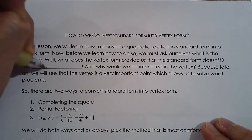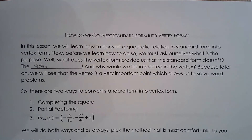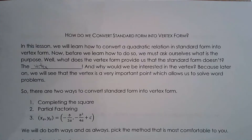Standard form gives you the y-intercept and basically nothing else. Factor form gives us the zeros. Vertex form gives us the vertex. So if you had a word problem that involved the maximum or minimum value of the function, you would probably want to change it to vertex form or at least find the vertex.